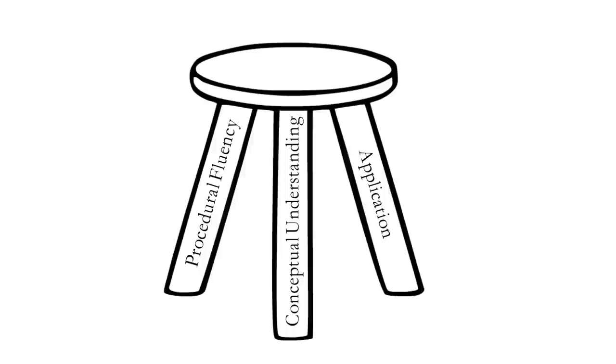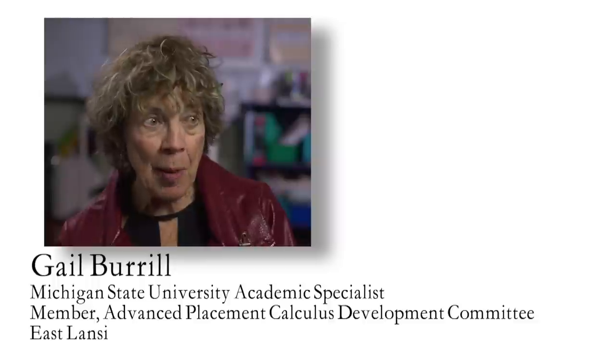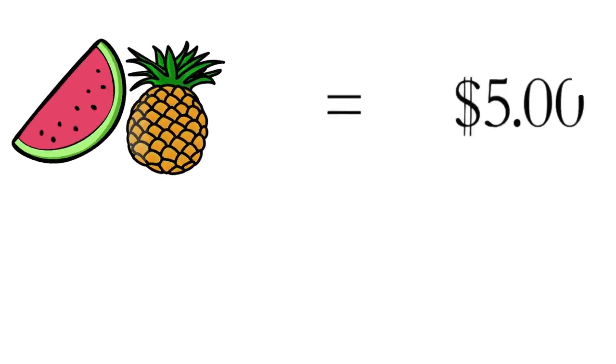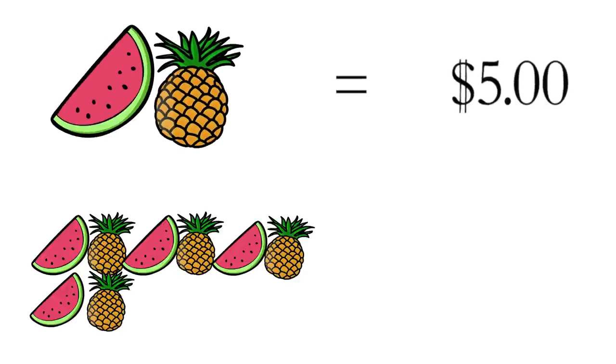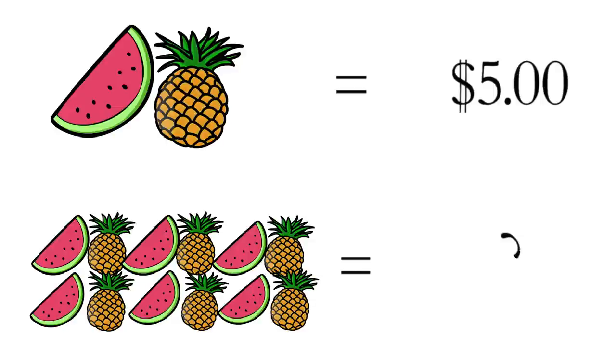It's very important that kids develop both a conceptual and procedural understanding of mathematical concepts. For example, if you have two pieces of fruit for $5 and want to know how much 12 pieces cost, too often kids set up the proportion and cross multiply without any instinct about what they're really doing, why it works, or whether their answer is sensible.